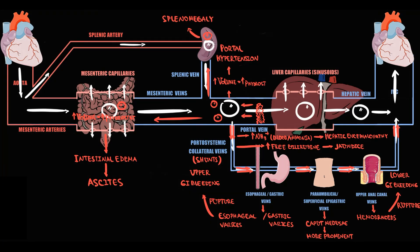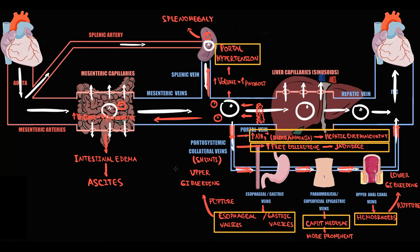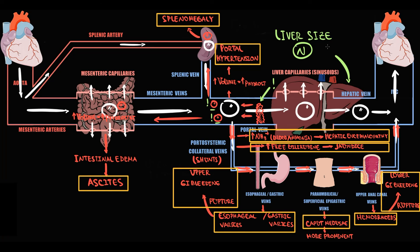In summary, portal vein thrombosis produces a number of clinical manifestations. First, portal hypertension causes formation of varices: esophageal and gastric varices, caput medusae, and hemorrhoids. Shunting causes increased blood ammonia level leading to hepatic encephalopathy, and increased free bilirubin level causing jaundice. Complications include rupture of varices causing upper and lower GI bleeding. The size of the spleen increases — splenomegaly — and ascites of mesenteric origin develops. Importantly, there is no hepatomegaly, because thrombosis occurs before the liver, so blood accumulates at more proximal regions and the liver size remains within normal range. Ascites occurs only due to the intestinal component.